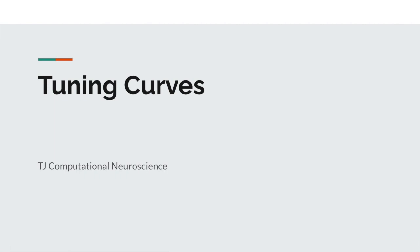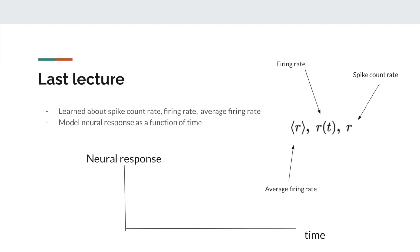This lecture is on tuning curves, a continuation of last week's lecture on neural encoding. Last lecture, we were trying to parameterize neural response with respect to time — modeling a neuron's output as a function of time. We discussed spike count rate, firing rate, and average firing rate as ways to capture information about neural response.